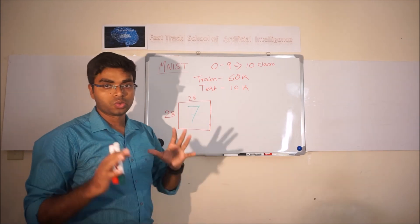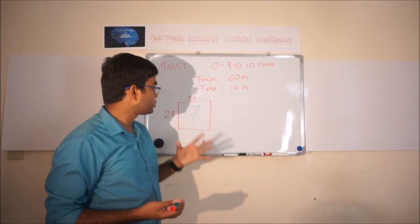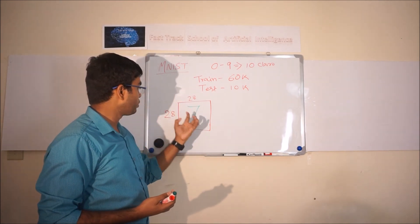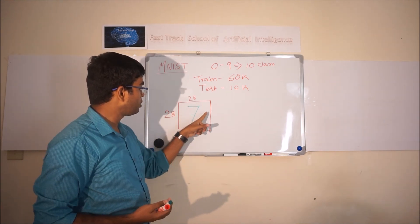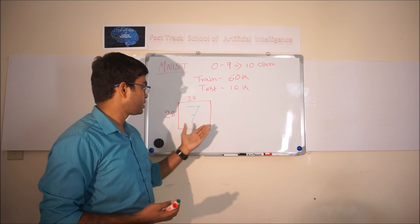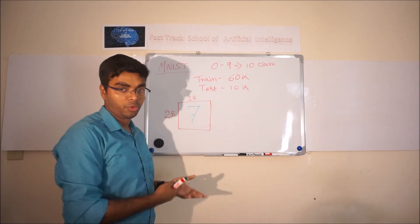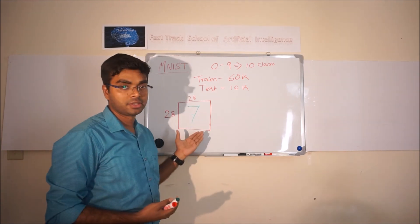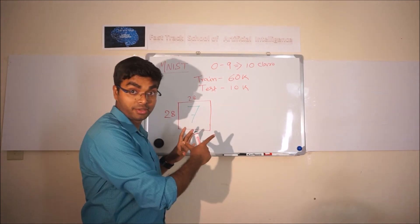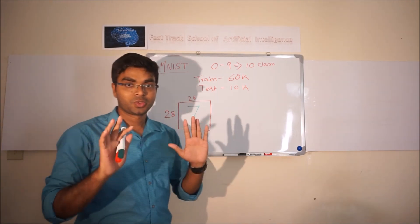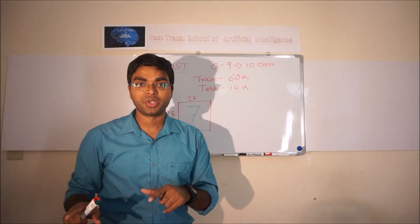Our target is to implement or create our model so that our model can automatically recognize what this particular image means. In this case it is 7. With human eye we can say this is 7, but our model should recognize this is number 7. So that is our target. So let's jump into our coding section.